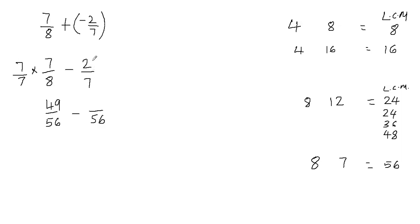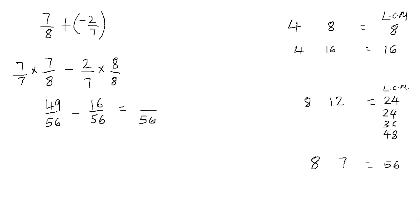Now for the second fraction: how do I get from 7 to 56? I multiply 7 by 8, because 7 times 8 is 56. If I'm multiplying the denominator by 8, I also multiply the numerator by 8. So 2 times 8 is 16, giving me 16/56. Now we have a common denominator and can subtract. We never subtract the denominators — the denominator stays 56 — and 49 minus 16 equals 33.